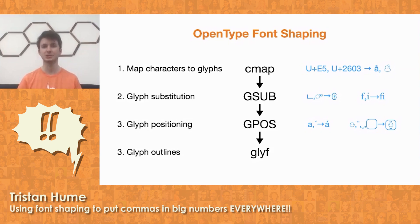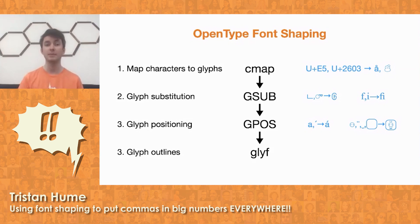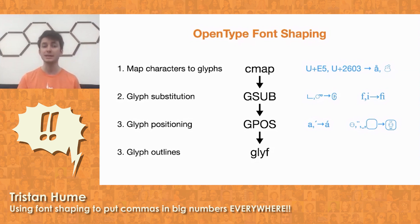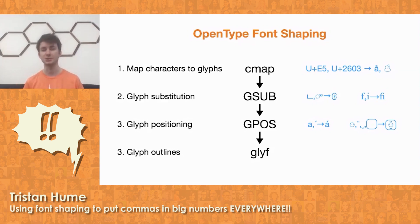Then this sequence of glyphs, after substitution, goes to the glyph positioning step, which positions glyphs on top of each other in the correct location so that your accents are, for example, above or below the character. At this point, everything is still just internal IDs used by the font, and it needs to be rendered by the UI system — translated to outlines — and these outlines for each glyph are stored in a table inside the font.